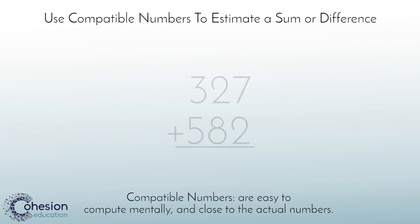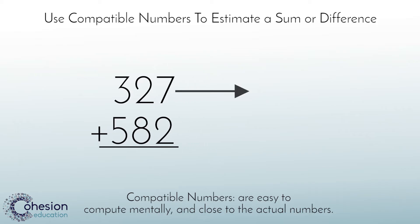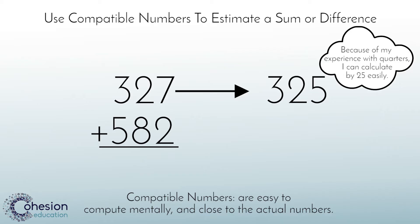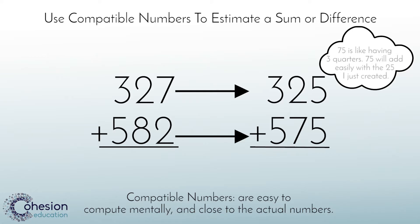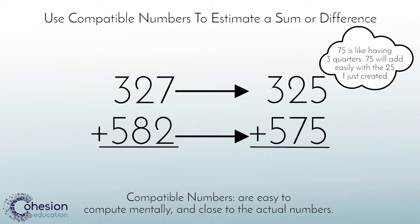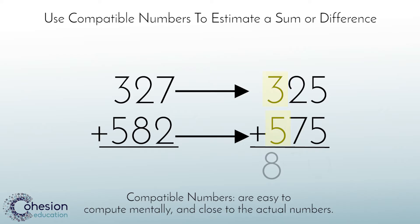For example, when looking to find the sum of 327 and 582, 327 could be estimated to be 325 and 582 could be estimated to be 575. So when adding together 325 and 575, you would get 900. These numbers are especially compatible because students may recognize that 25 plus 75 makes another 100.